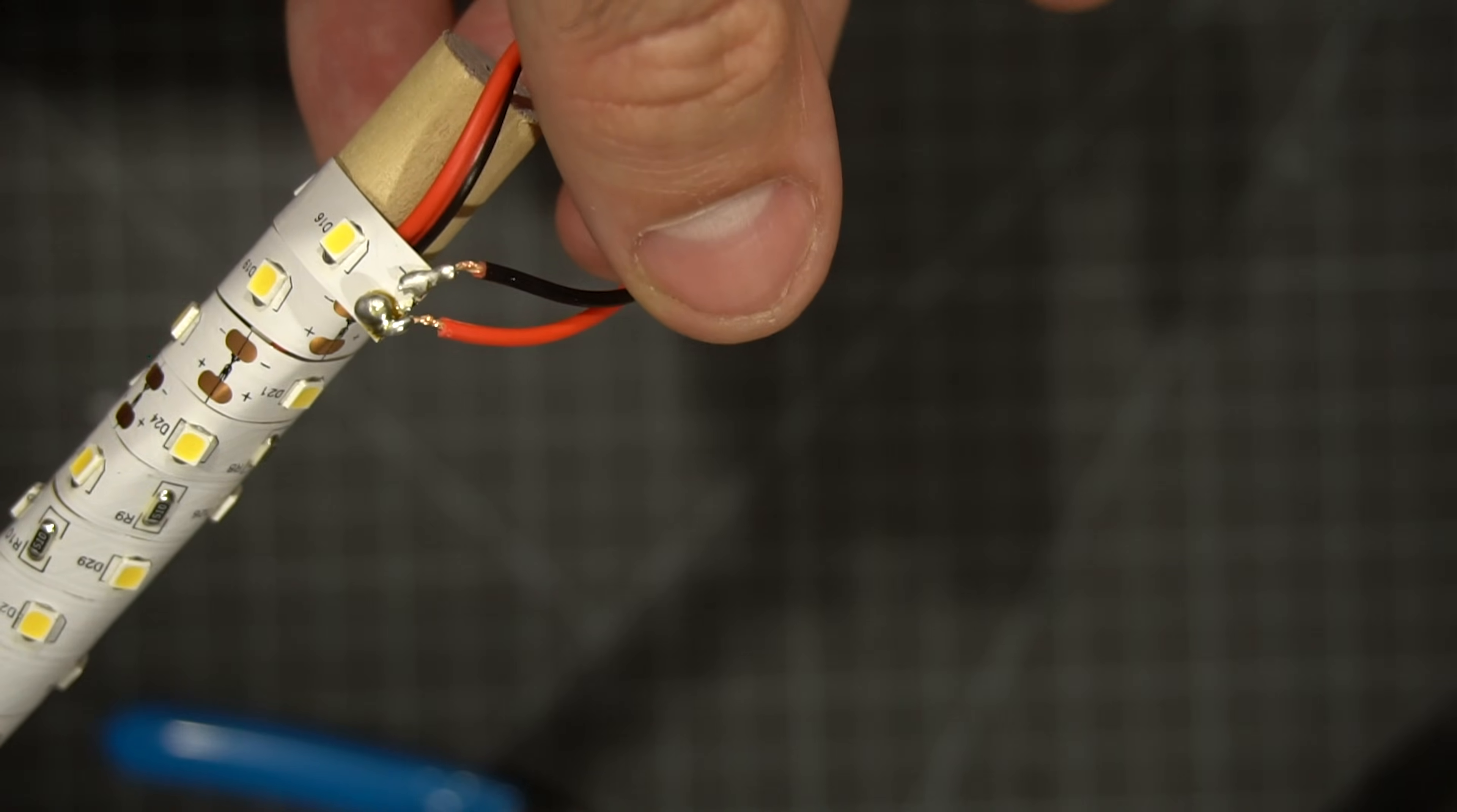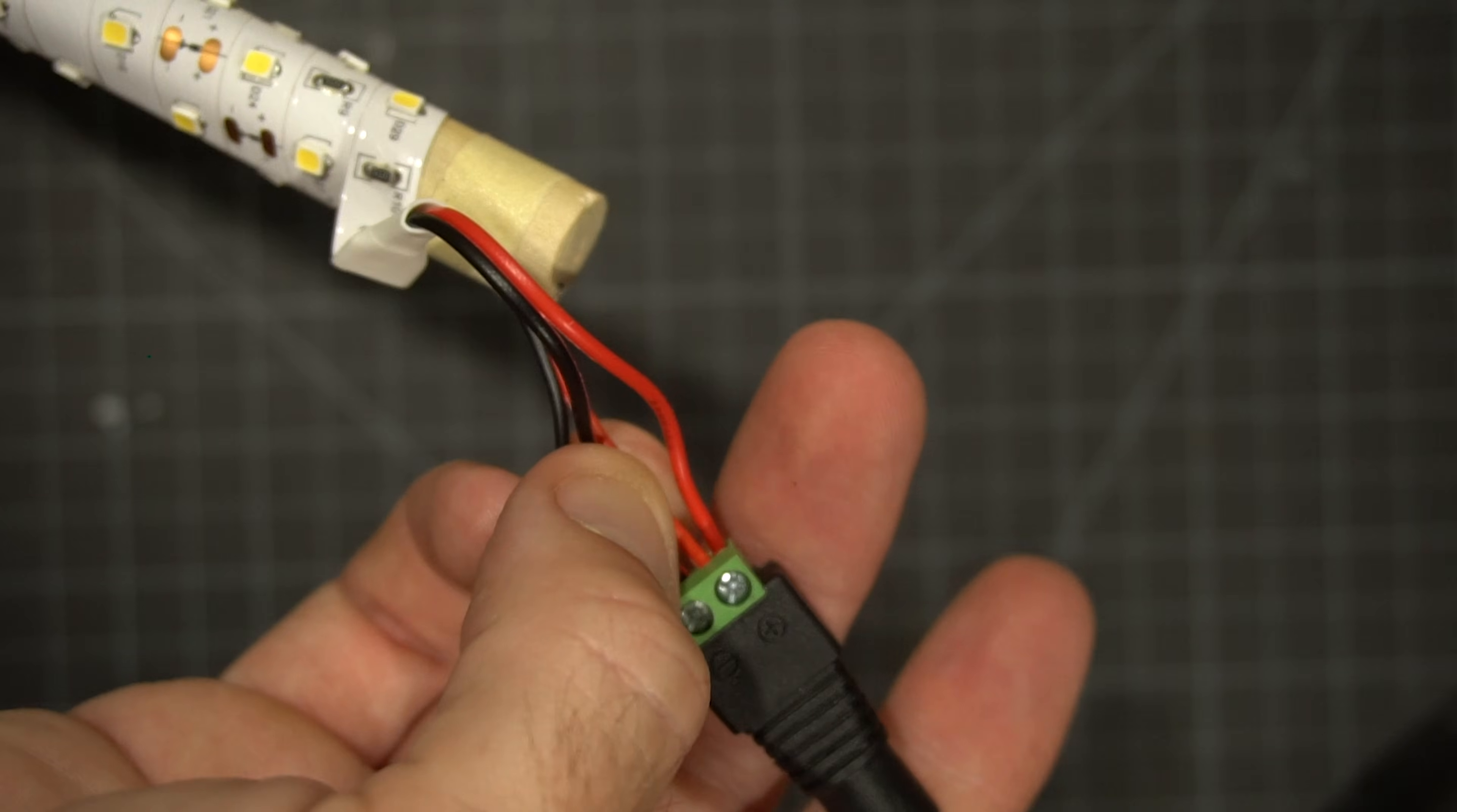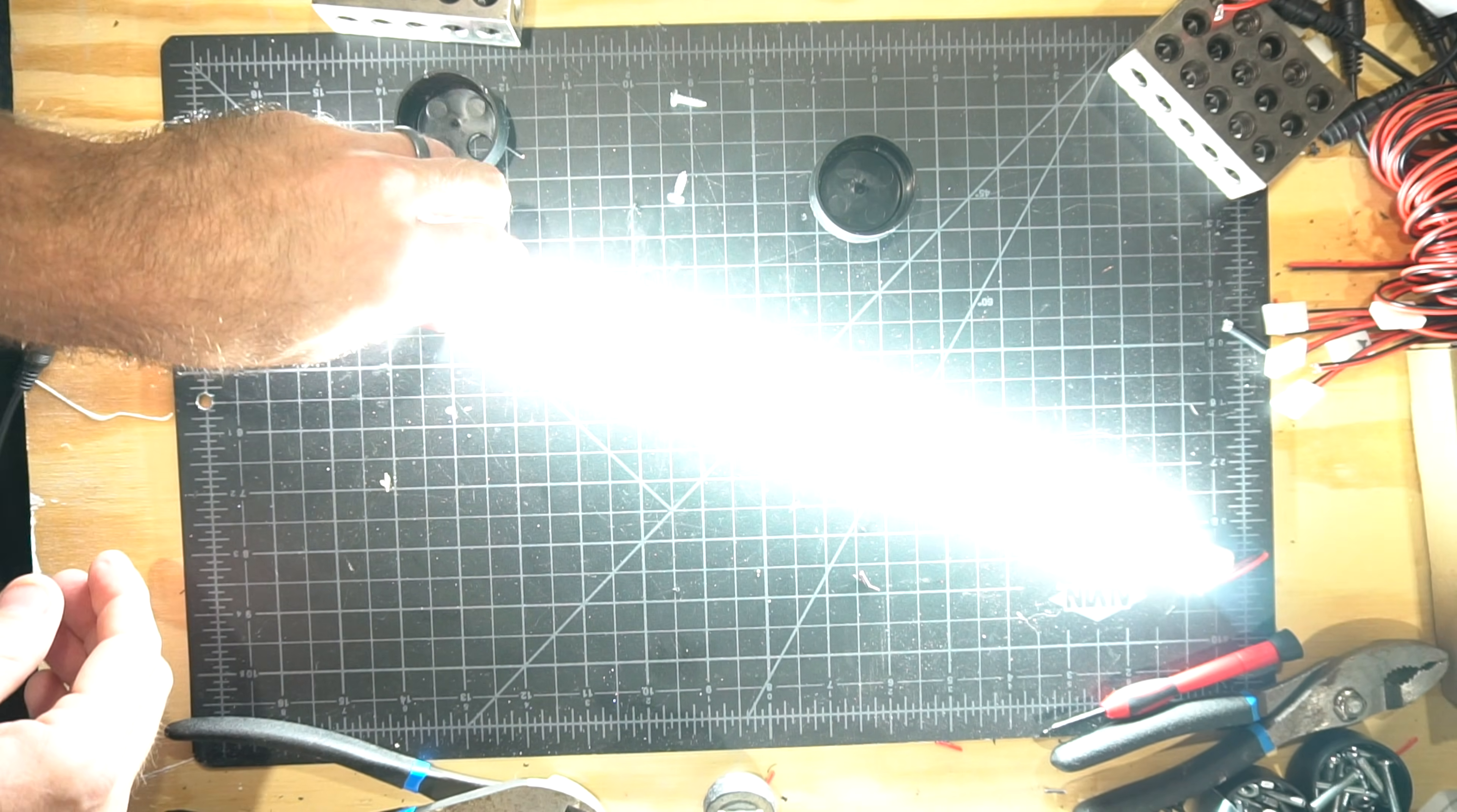You should now have a dowel covered in LED lights with one end soldered and the other end ready to get plugged in. At this point in time, it probably looks bare and ugly, but we're going to add those frosted tubes in just a minute and make sure it looks real sexy. Before you go any further though, make sure your connections are solid by plugging it in.